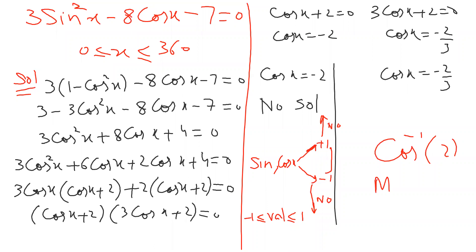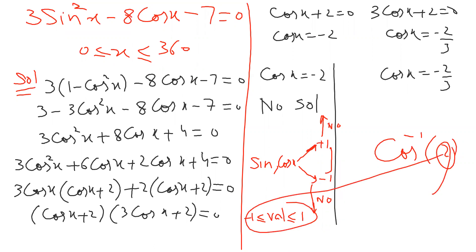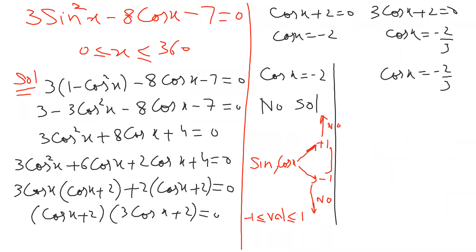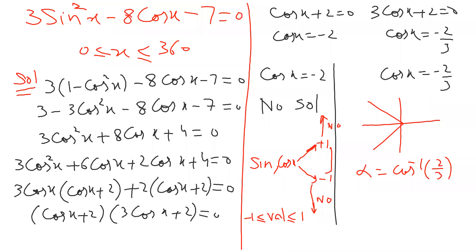If you try to take cosine inverse of two, you will not get any answer. That is why: if the value inside the bracket is in the range of minus one to plus one, you get an answer. If above or below, you will not get an answer. I hope you got the idea.